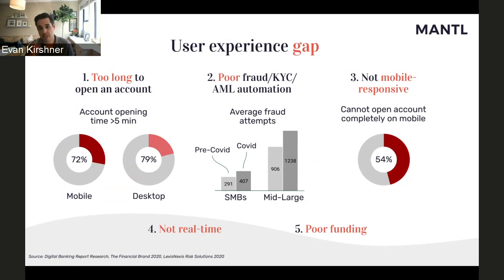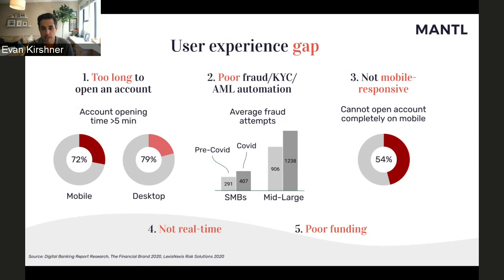The third gap: solutions aren't mobile responsive. Only about half of community banks with a solution can open an account on mobile, but our data shows 60% of checking account traffic comes through mobile. Unless you're a mobile-first platform, you're already missing out on over half the pie. The fourth gap is no real-time core integration — that should be table stakes. It shouldn't require someone to manually book accounts to your core; it should have real-time read and write ability with the core provider. For a net new customer, they should be able to open an account in less than three minutes. For an existing customer, we should pull information from the core — they should be able to open an account in less than 30 seconds.